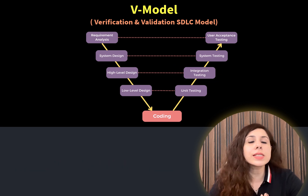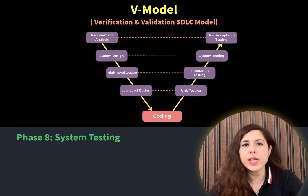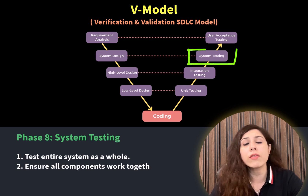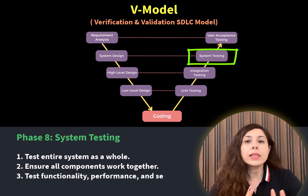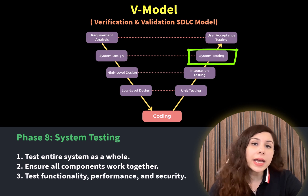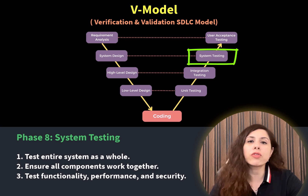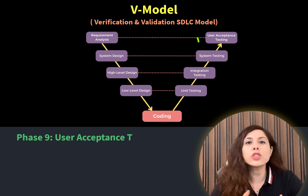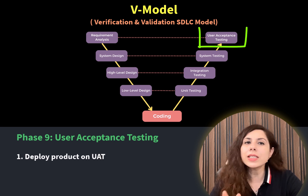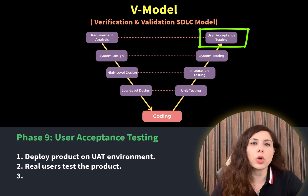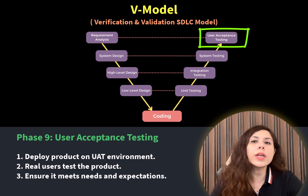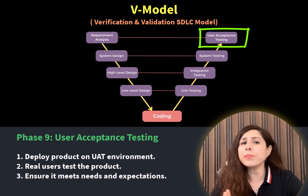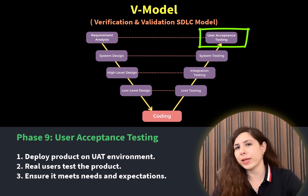After this comes the system testing phase. In this phase, we test the entire system as a whole to make sure everything works together, including testing the entire app for functionality, performance, and security. The last phase of V-Model is User Acceptance Testing, where we deploy the product on the UAT environment so real users can test the product to ensure it meets their needs and expectations.